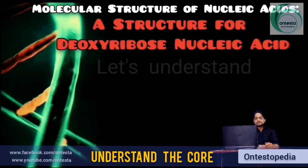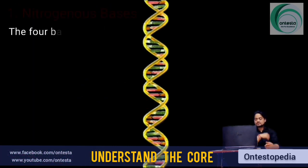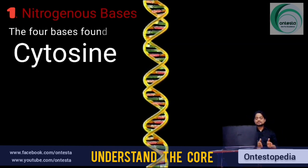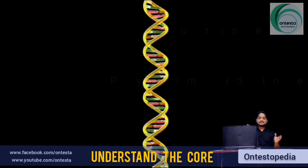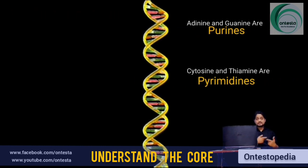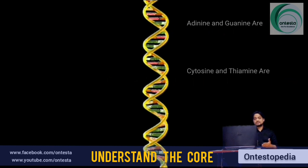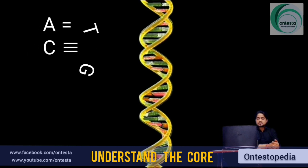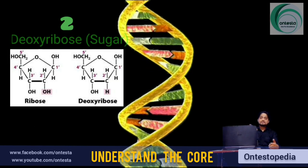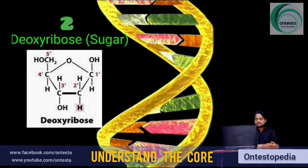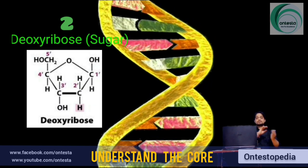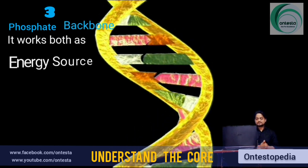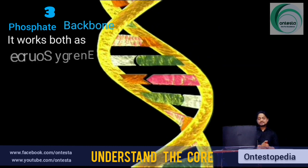DNA has 3 basic constituents. First, the nitrogenous bases: the 4 bases found in DNA are adenine, guanine, cytosine, and thymine. Adenine and guanine are the purines, while cytosine and thymine are the pyrimidines. Purines always bond with pyrimidines — adenine is double-bonded with thymine, and cytosine is triple-bonded with guanine. The second component is deoxyribose sugar, which differs from ribose by having one less hydroxyl group, making it more stable and less reactive. The third component is the phosphate backbone, which serves both as an energy source and substrate for adding nucleotides.